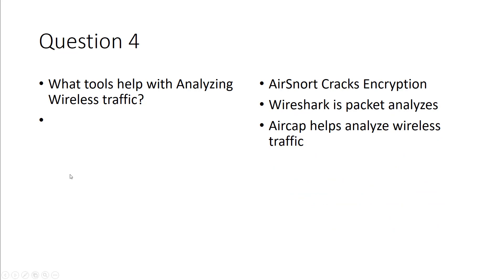What tools would you use to analyze wireless traffic? Understand the different types of tools. Wireshark is a packet analysis tool, so typically you'd be using Wireshark. But because it's wireless traffic, you might need an add-on component. Air Snort is for cracking encryption. Air Cap is an add-in for Wireshark that helps with analyzing wireless traffic. So to analyze wireless network traffic, you'd use Wireshark and Air Cap. If the traffic is encrypted, you'd add Air Snort.